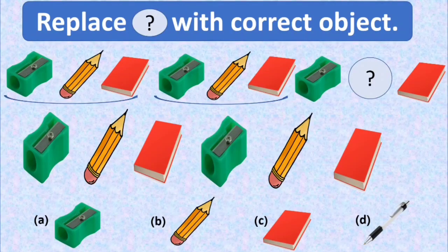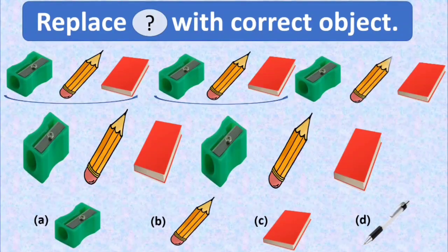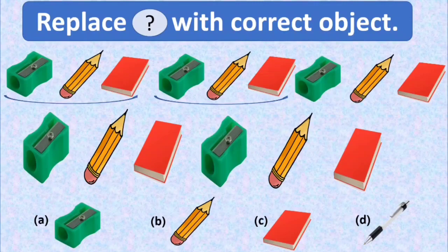So, for the third time again, there is a sharpener and then a question mark. So the question mark is the place for pencil, and the pattern is complete. Option B, pencil is the correct option, and we have to place a tick mark at option B.